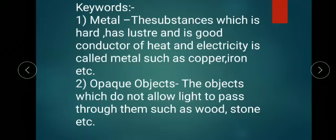We have differences between opaque, transparent, and translucent objects. Opaque objects do not allow light to pass. Transparent objects allow light to pass completely, and translucent objects allow only some light to pass through them.